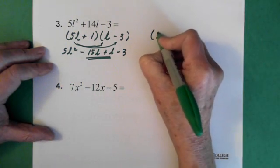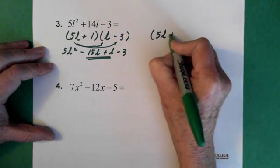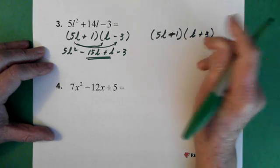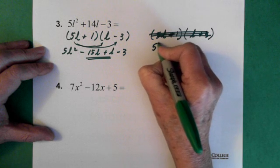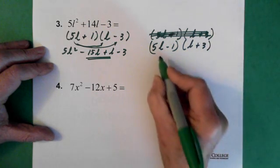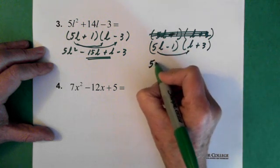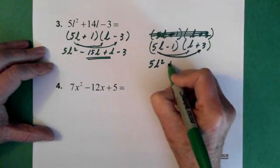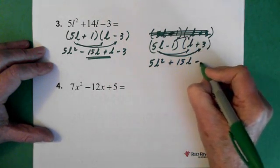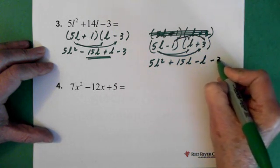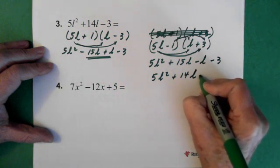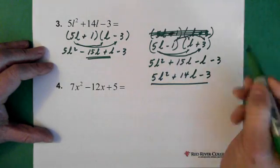All you do is move the sign. So: 5L minus 1 times L plus 3. Multiplying through, we have 5L squared plus 15L, then minus L, and then minus 3. So we end up with 5L squared plus 14L minus 3. And there we are. These are our factors: 5L minus 1 times L plus 3.